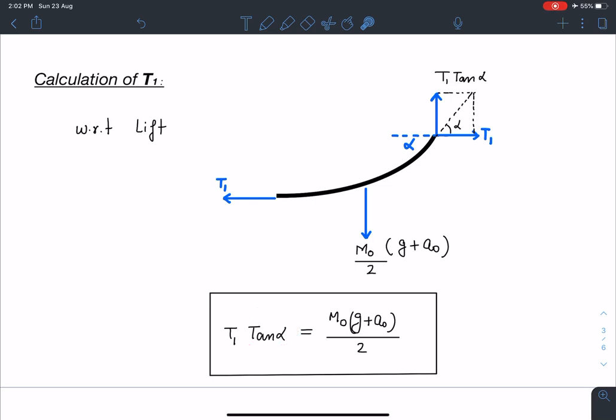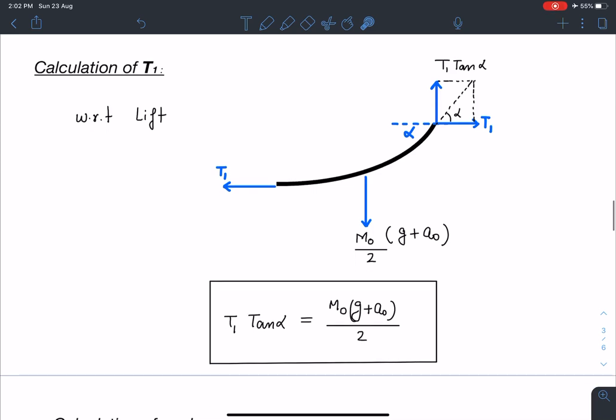So if somehow I can find this tan alpha, I'll be getting the T1 and I'll be getting the tension at this point also. And also I'll be getting the radius of curvature. So now our job is to find out this unknown angle alpha.